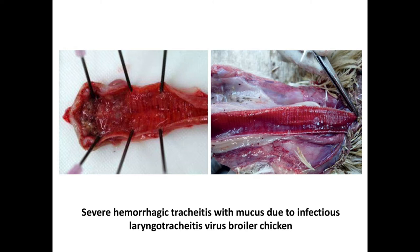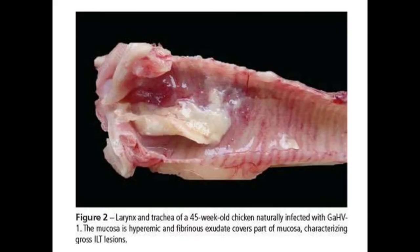There is blood, mucus, and fibrinous exudate or a fibrinous cast in the trachea — these are the diagnostic findings in severe forms. Here you can see hyperemic mucosa with fibrinous exudate covering the trachea, which is a characteristic gross ILT lesion in the severe form of the disease.